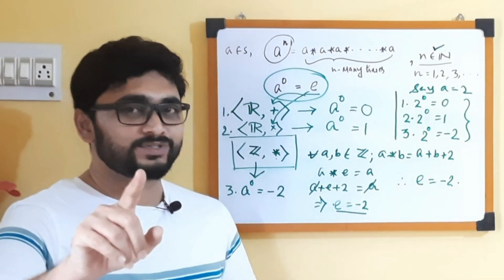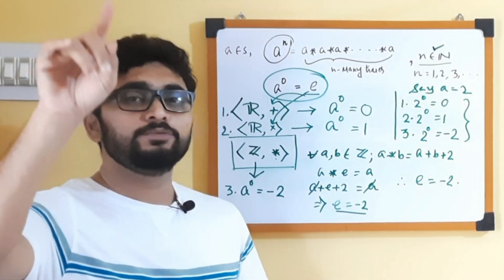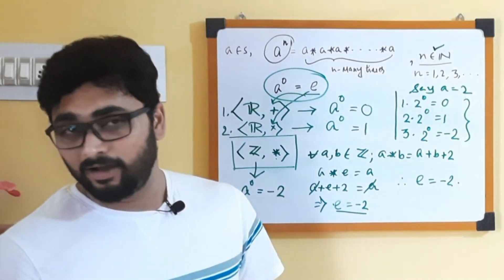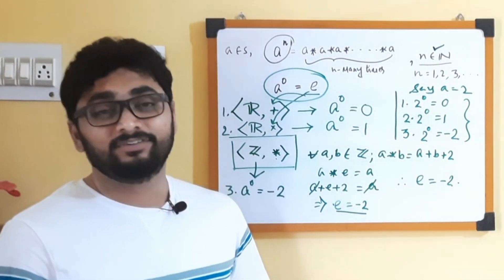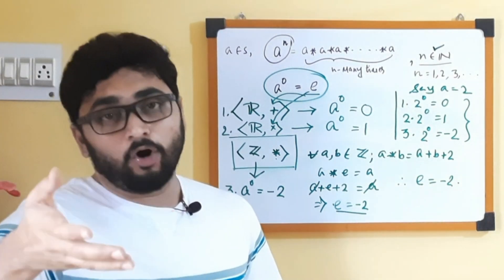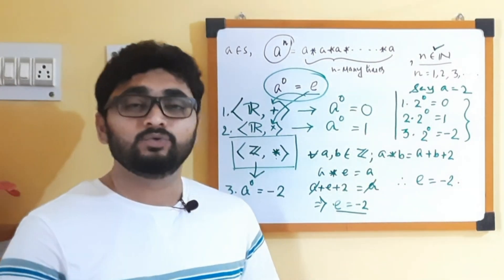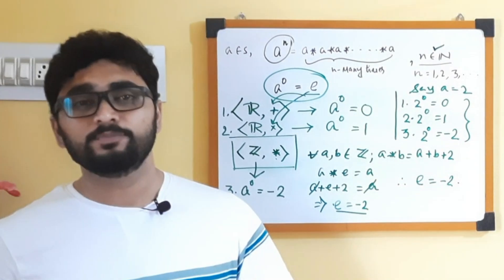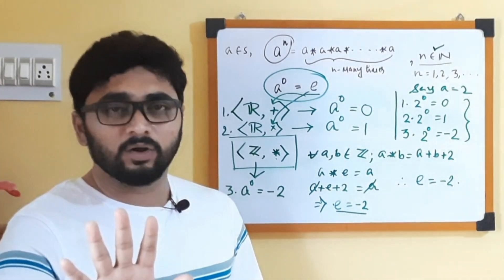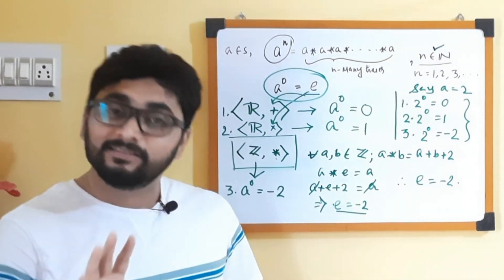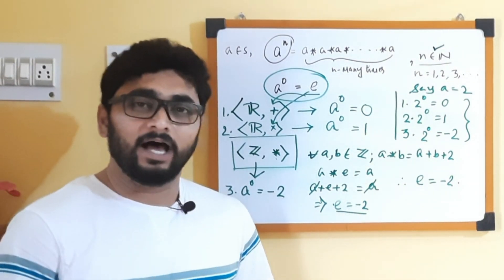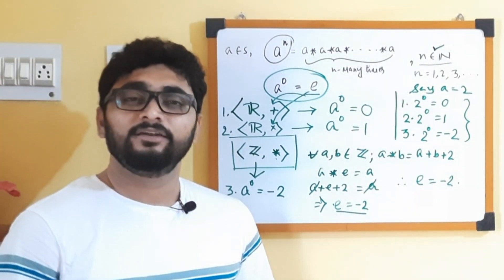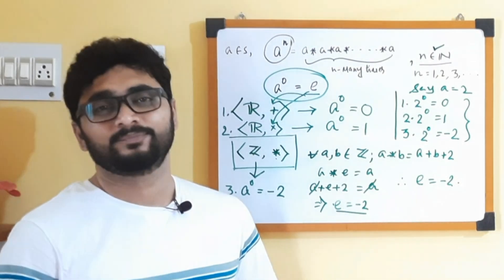From next time onwards, if anybody asks you what is 2 to the power 3, don't jump to the conclusion that it is 8 — it might be 6 also, unless your operation is multiplication. And if anybody asks what is 2 to the power 0, or 5 to the power 0, or 1000 to the power 0, hold on — ask what is your binary operation, then give the answer accordingly. I hope I have been able to clear my point. See you in my regular uploads of complex analysis. Take care, bye.